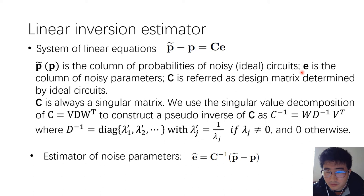e is a column of noise parameters that we want to estimate. The C matrix is referred as the design matrix, which is totally determined by ideal circuits.